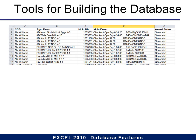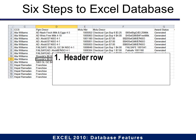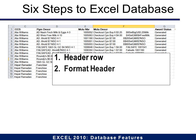First, let's look at tools for building the database. There are six steps. The first is you must have a header row. Above all your data, make sure that you put in a header row that explains what goes in it. Then you have to format it so that Excel knows it's a header row. To do that, you simply bold it. You can format it any other way you'd like, but you must bold it for Excel to understand that it is a header row.